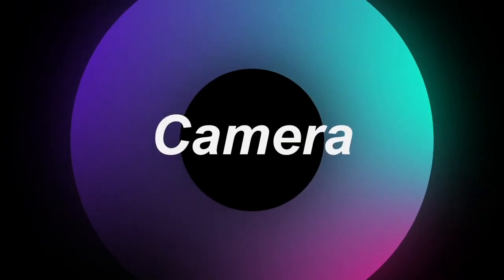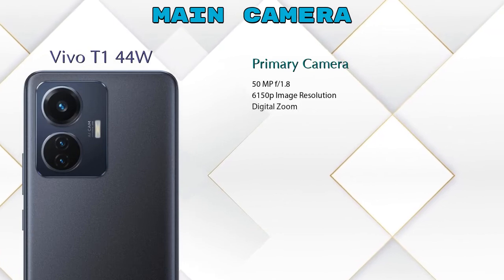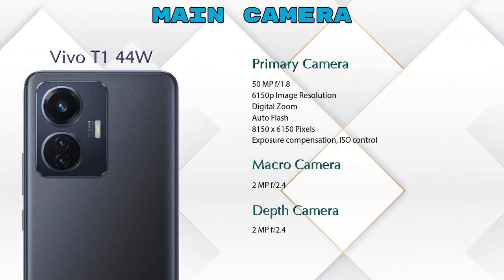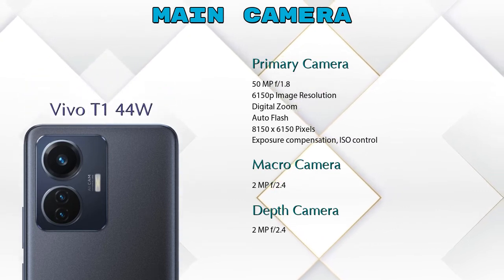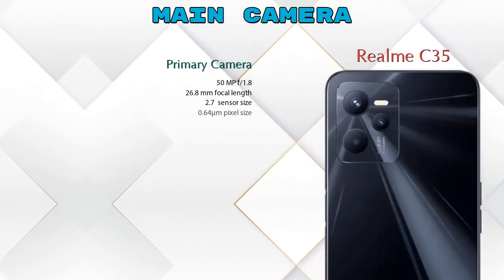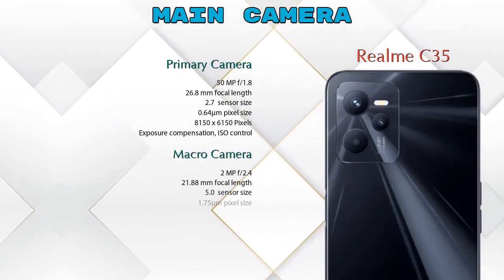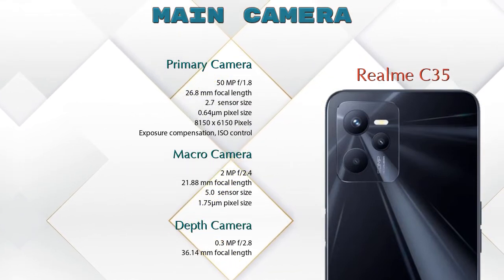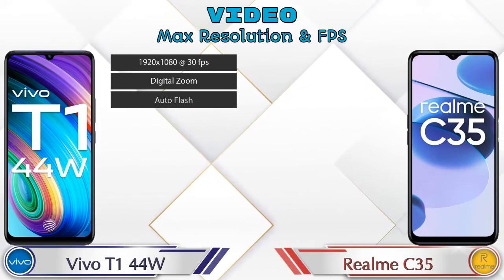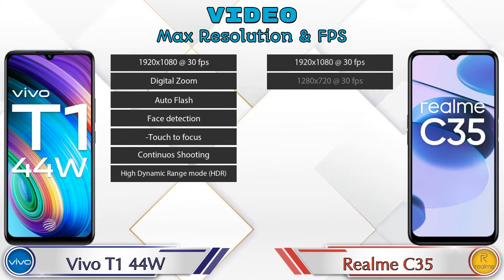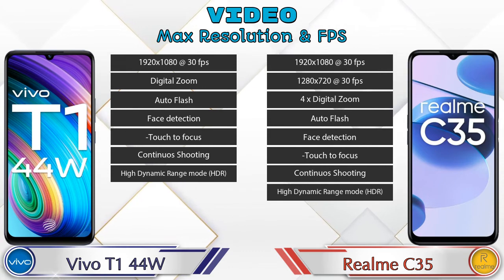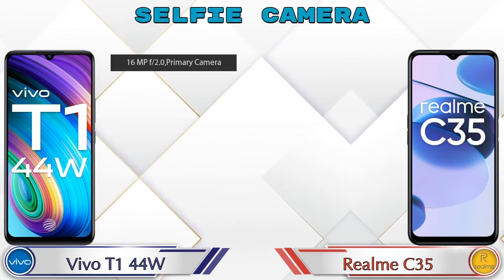Let's see the detail about our favorite feature — camera. First talking about the rear camera: the T1 44-watt has three cameras — primary camera, macro camera, and depth camera. The Realme Narzo 35 also has three cameras — primary, macro, and depth. For video camera features, the T1 44-watt has seven and the Realme Narzo 35 has eight different types of features available.